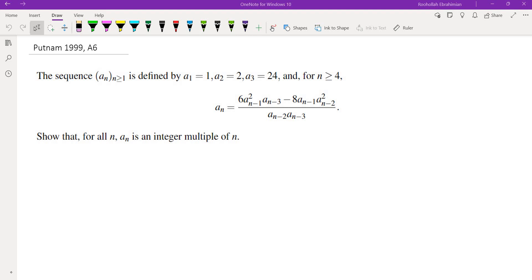Hello, in this video we're going to go over problem A6 from the 1999 Putnam math competition. This is a problem about a sequence given by a recursion: A1 equals 1, A2 equals 2, A3 equals 24, and An is this complicated recursion. We want to show that An is an integer multiple of n.